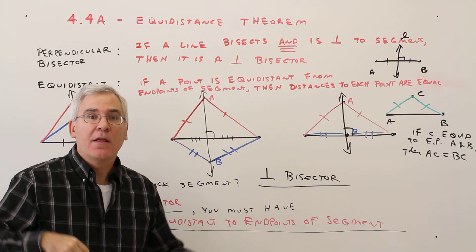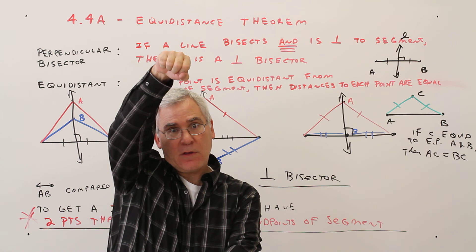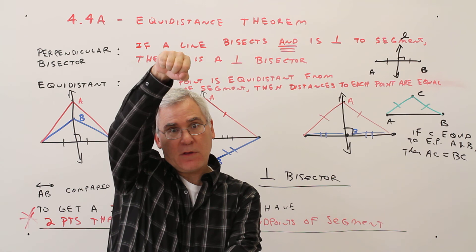That is the major concept. To get a perpendicular bisector, you've got to have two points such that they are equidistant to the endpoints of the segment. And then if you connect those two points, you will obtain a perpendicular bisector.